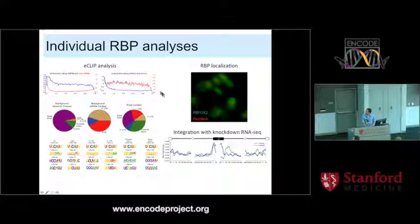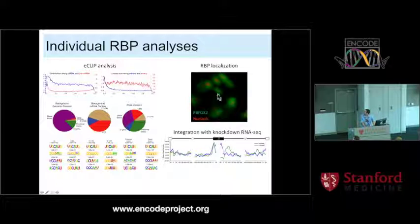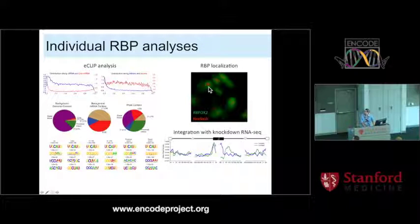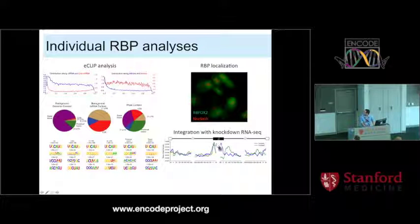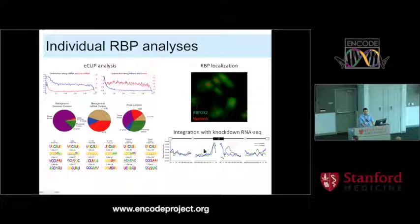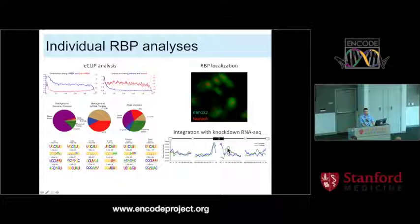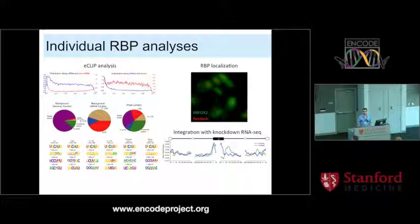We can integrate CLIP with RBP localization data from Eric Luquier's lab. FOX2 is heavily nuclear, specifically anti-nucleolar. We can also integrate with RNA-seq data to create RBP maps or splicing maps: looking at exons differentially regulated by FOX2, exons included upon FOX2 knockdown tend to have more FOX2 binding in one region, whereas skipped exons excluded upon RBFOX2 knockdown show enrichment of binding in a different location. So we can build splicing maps for individual RBPs.